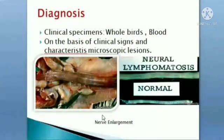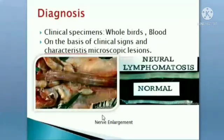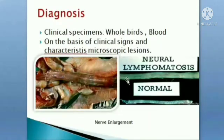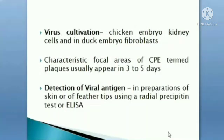For diagnosis in poultry, representative birds are sent for post-mortem. On the basis of clinical signs and characteristic microscopic lesions, diagnosis can be made. Nerve enlargement — neural lymphomatosis — is a key finding. The normal nerve versus enlarged nerve comparison shows significant enlargement upon Marek's disease infection.